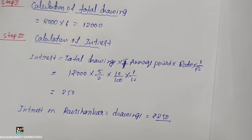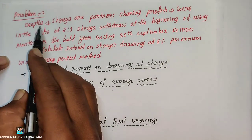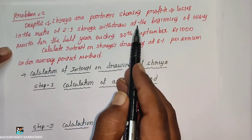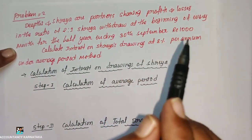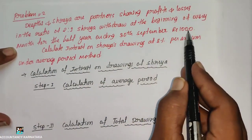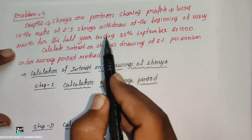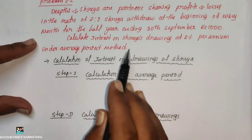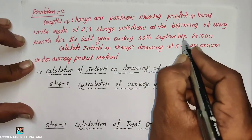Now for the homework problem: Dee and Sriyah are partners sharing profits and losses in the ratio of 2:1. Drawings are made at the beginning of every month for the half year ending 30th September. Calculate interest on drawings at 8% per annum.